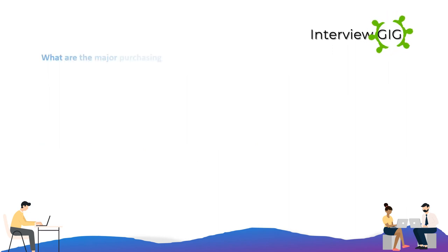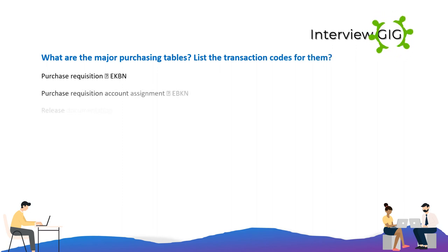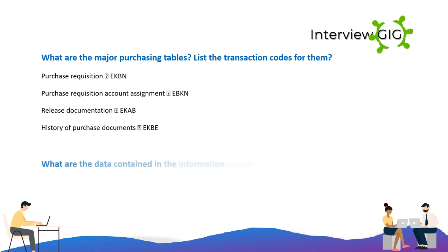What are the major purchasing tables? List the transaction codes for them. Purchase Requisition: EKBN. Purchase Requisition Account Assignment: EBKN. Release Documentation: EKAB. History of Purchase Documents: EKB.